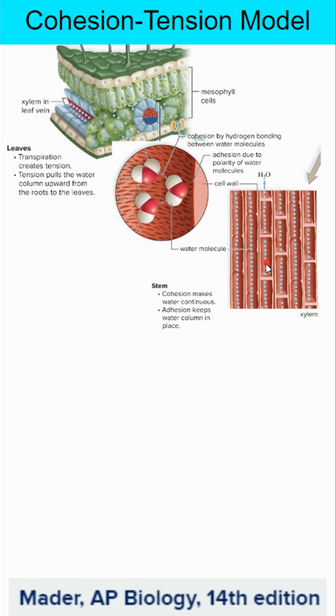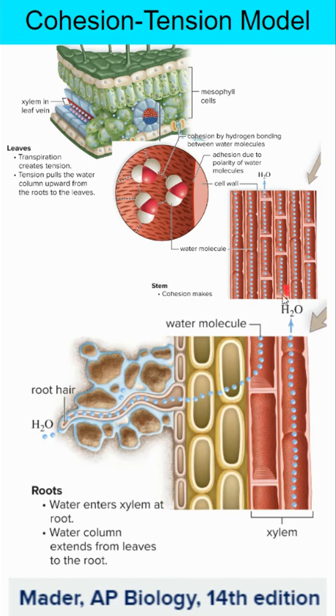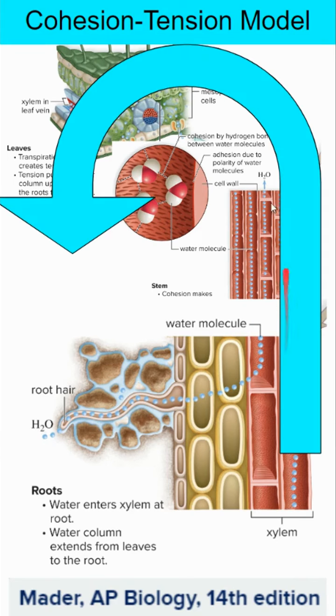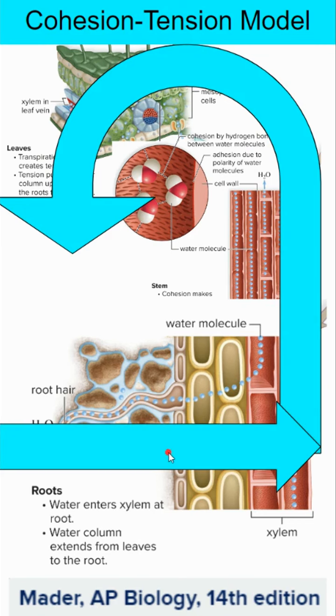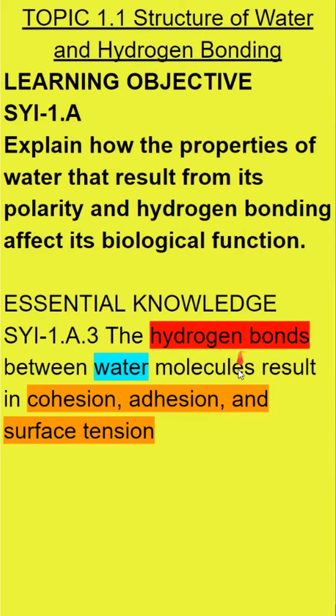And then as these keep pulling, it's pulling it up. They're leaving, pulling it up, and it's going to pull the water in through the root hairs and then ultimately up the xylem. So we've got this process where the water leaves and it pulls on every individual water molecule behind it because of hydrogen bonds.